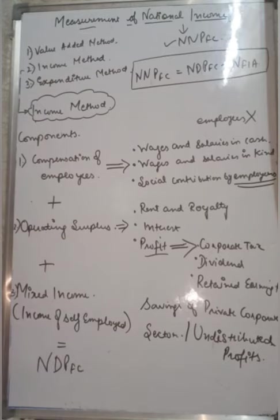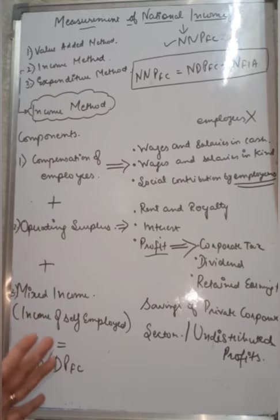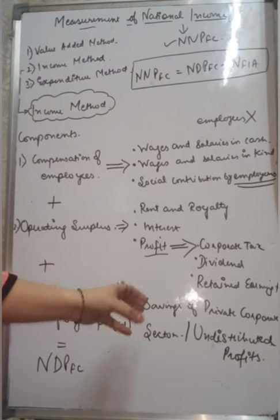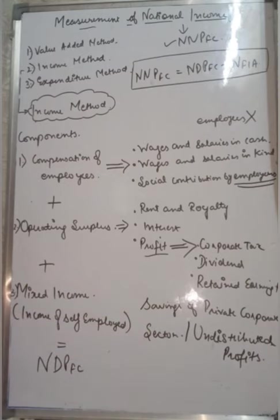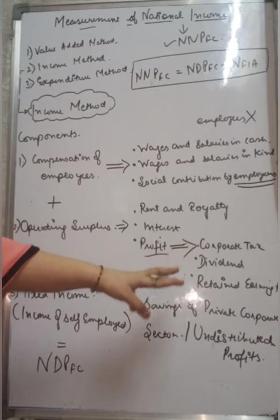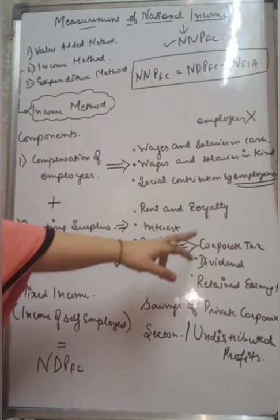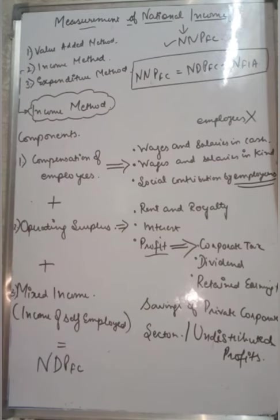One part of profit is dividend — that is the portion distributed to shareholders. Now the company doesn't distribute all its profits; some are kept for future use — that is retained earnings, also called saving of the private sector or undistributed profits. These are the components of profit. If profit figures are given directly, we take them as-is; otherwise we add up these three parts.